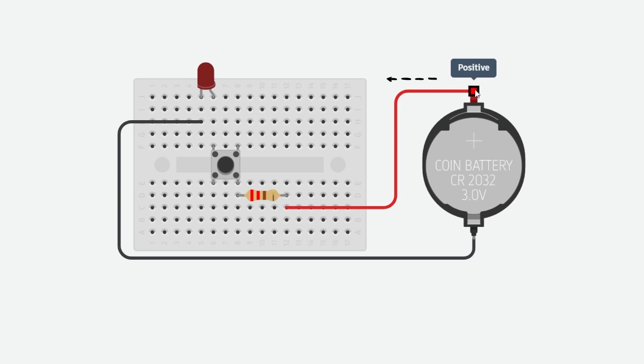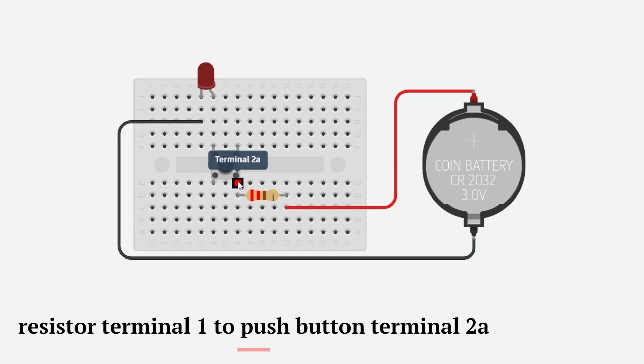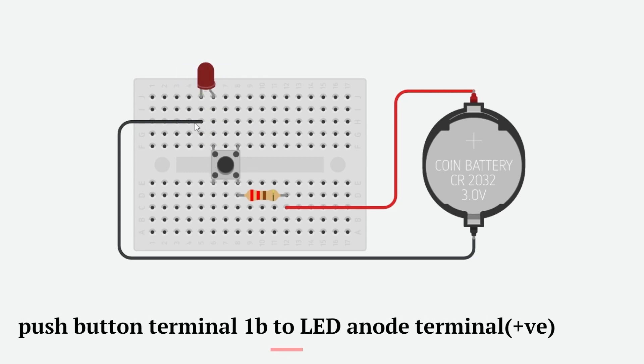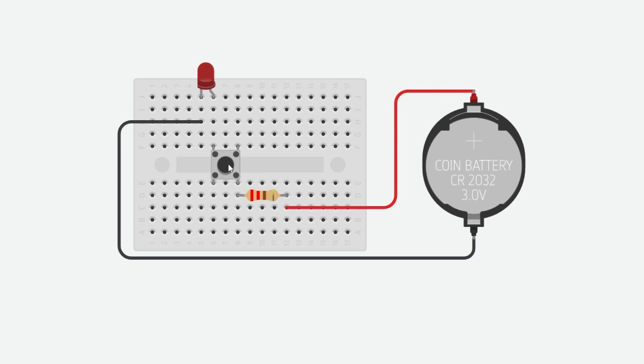The current goes from positive terminal of the battery to resistor terminal 2, then resistor terminal 1 is connected to the push button terminal 2a, and after that push button is connected to the LED positive terminal. You can see the LED turning on when I press the button.